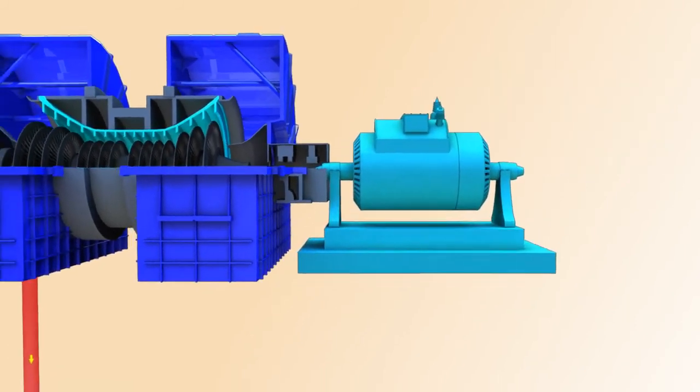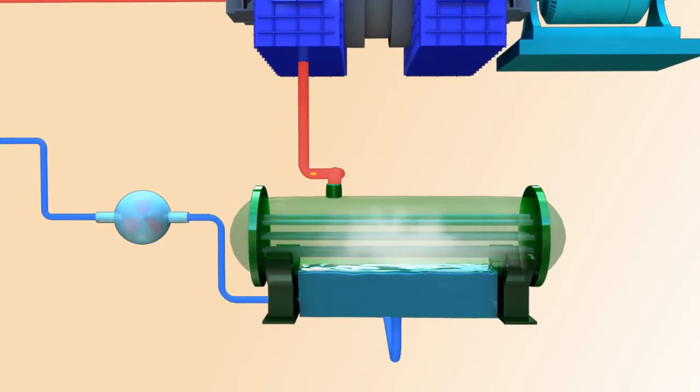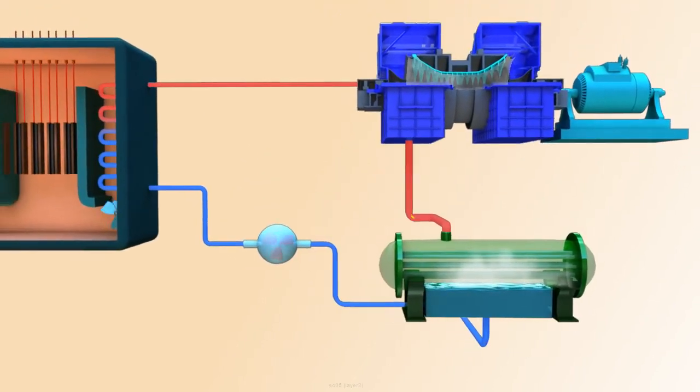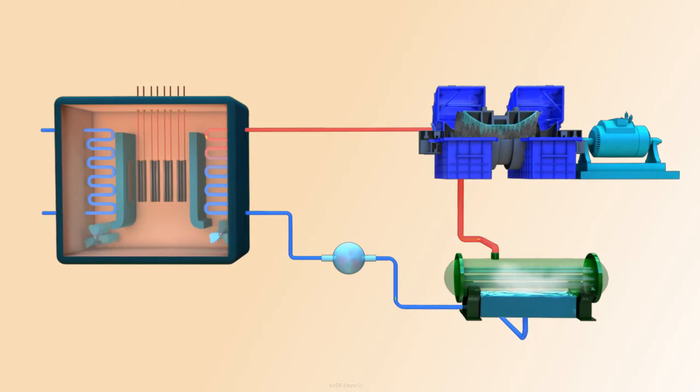The steam from the turbine is converted back into water via a condenser and is pumped back into the steam generator. This kind of reactor can unload the fuel without shutting down and is safer, especially in case of accidents.